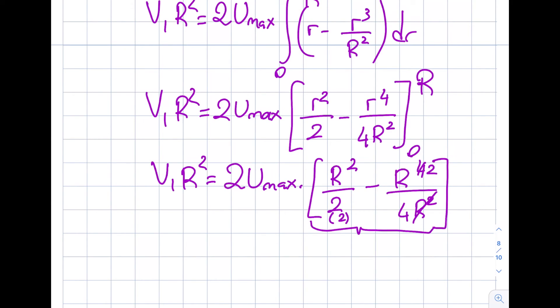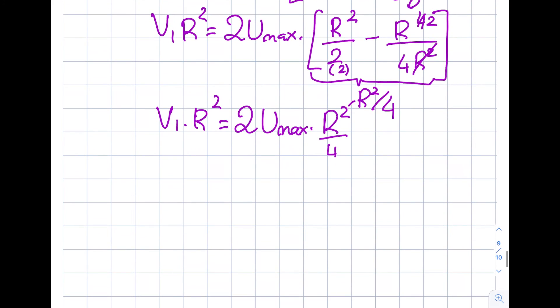So what does this become now? That becomes r square over 2 minus r square over 4. So it's going to be 2 minus 1. So it becomes r square divided by 4. So then v1 times r square will be equal to 2 u_max times r square over 4. R squares cancel one another. So I got myself v1 is equal to u_max divided by 2.